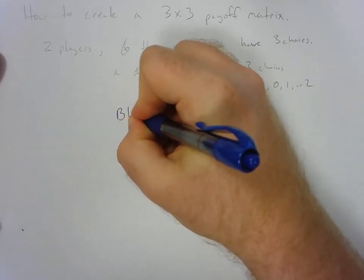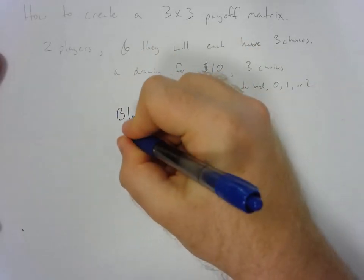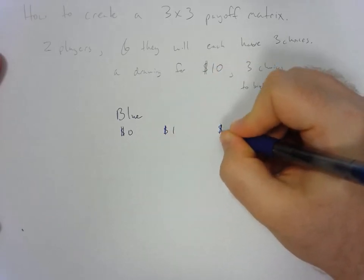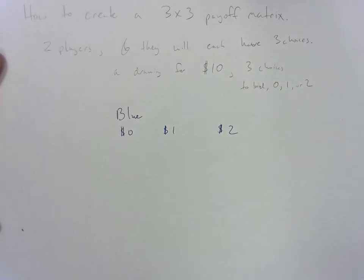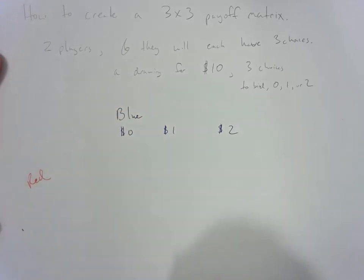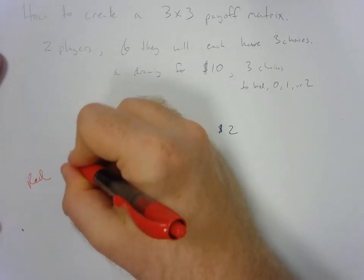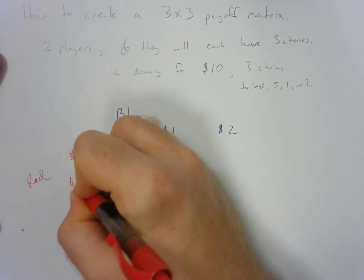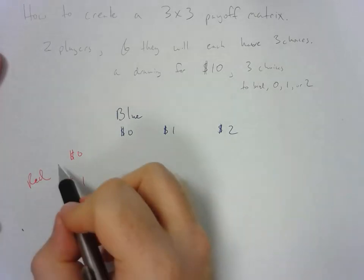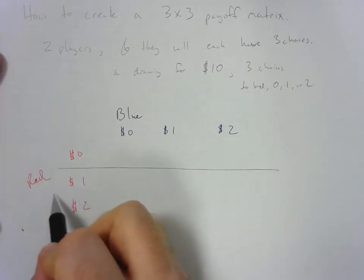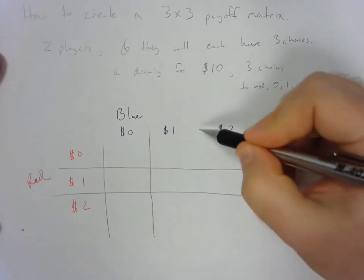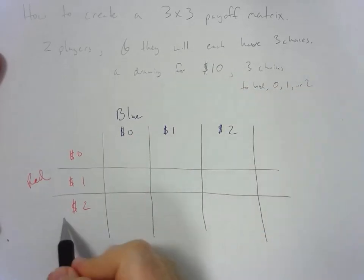So we can imagine that we have a blue player and this blue player can bid zero, one, or two. Similarly we will have a red player and this red player can bid zero, one, or two. Then what we're going to do is create this matrix. This shows all of the different possible outcomes and then we can estimate the values of those outcomes.